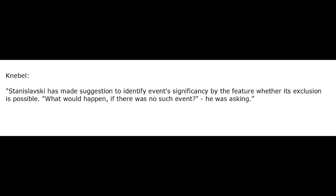Stanislavski suggested identifying an event's significance by the feature of whether its exclusion is possible — 'What would happen if there was no such event?' It was Stanislavski who first gave names to significant events: Initial event and Main event. Later on, Tostanonkov and Katzman, known as the Petersburg school, added defining event, central event, and final event, along with the play's leading given circumstance. They created the term 'event line' or 'event row.'